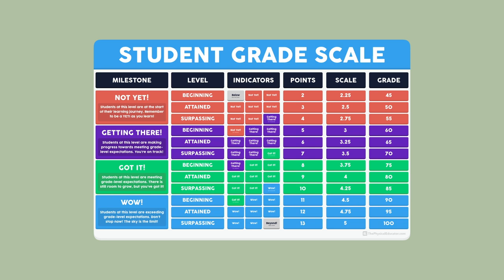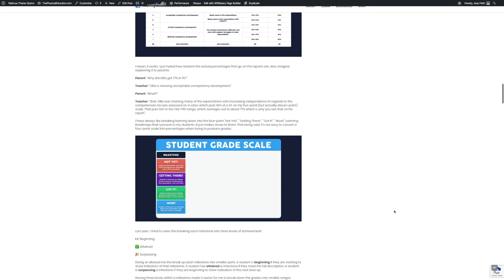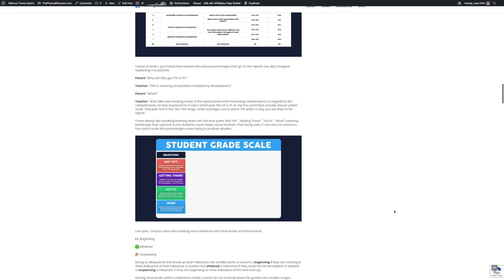There's another reason I always select three student indicators per outcome — it has to do with how I produce grades. Earlier this year I completely revamped my student grade scale to make it easy for students to understand how their grade came to be and easy for me to communicate to parents and administrators. Honestly, I hate grades, but they do serve a purpose — they're supposed to mark progress toward mastery. I'll link my 'Meaningful Grades' blog post on thephysicaleducator.com so you can learn more about that.